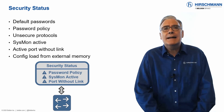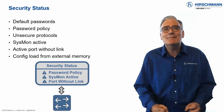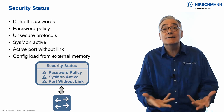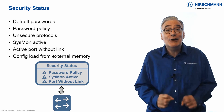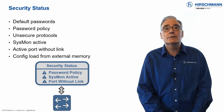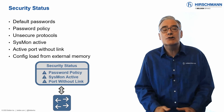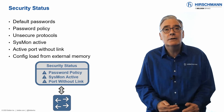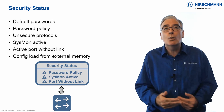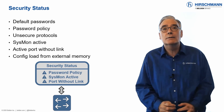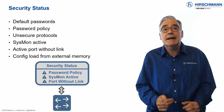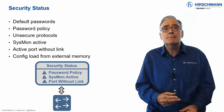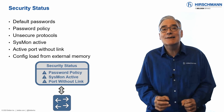Switches support many security mechanisms, and it can sometimes be challenging to decide which mechanisms should be implemented on a switch. The HiOS Security Status function is here to help you. The security status configuration screen lists typical security functions which can be configured on a network. From this list, you can select which functions are important to your network. An alarm will be generated if one or more of your selected functions have not been activated, meaning you will be notified about unsecure configurations.